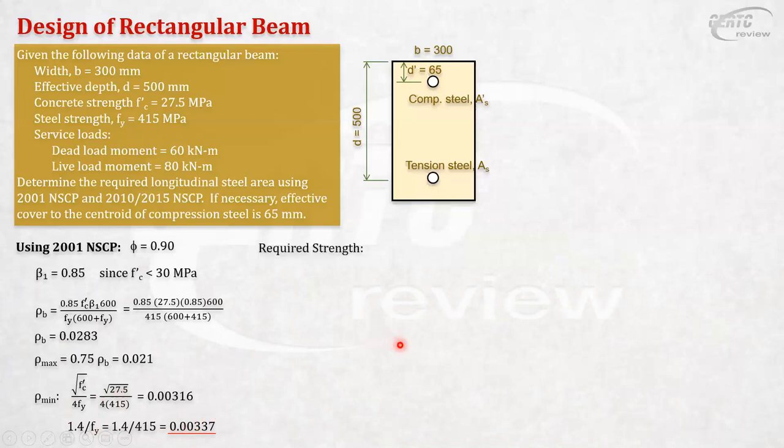Okay. So, next, let's compute the required strength. Mu. Some say ultimate moment. No, no, no. That's not the ultimate moment. The required strength, factored load. Comes from the factored load. So, okay. We are using 2001. So, that will be 1.4 dead plus 1.6 live. The dead is 60. The live is 80. Okay. So, it's equal to 220 kilonewton meter.